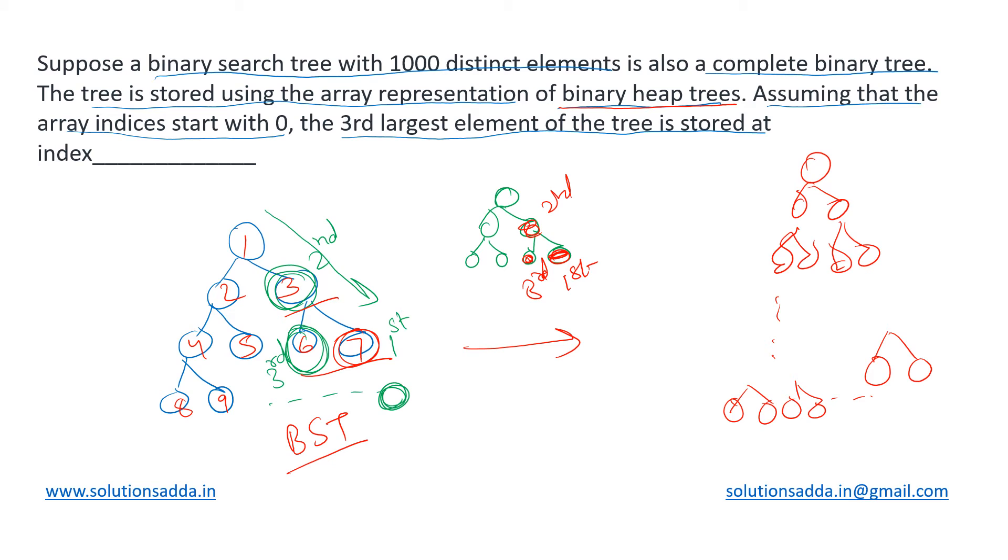The last level will also be incompletely filled in this tree, just because the number of nodes is 1000. For a complete binary tree, the number of nodes has to be a power of two minus one, which is not there in this case. So the last level is incomplete.